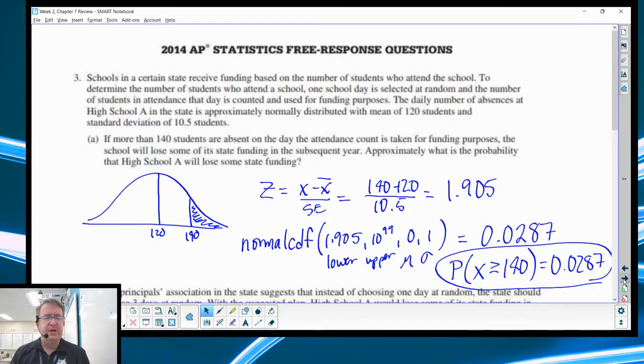To determine the number of students who attend school, one day is selected at random and the number of absences counted. And the daily number of absences at high school A is approximately normally distributed with 120 students absent and a standard deviation of 10.5. Now in the back of your head, you should be thinking standard deviation, mean, okay, probably going to do something with Z scores here.